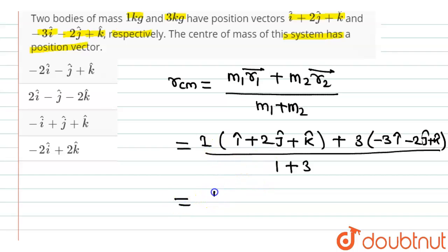Now on solving this, we get 1 into i, it will be i, so here i plus 2 j plus k cap, plus minus it will be minus 9 i cap, plus minus it will be minus 6 j cap plus 3 k cap divided by 4.